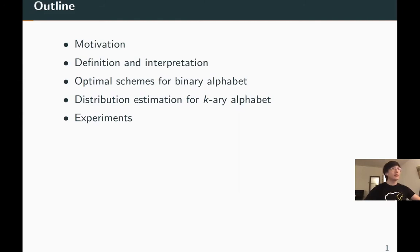We will start with the motivation of the work, then provide the definition and interpretation. After that, we provide optimal schemes for binary alphabet. For general k-ary alphabet, we study the task of distribution learning and provide tight trade-offs for two special cases. We conclude with experimental results.